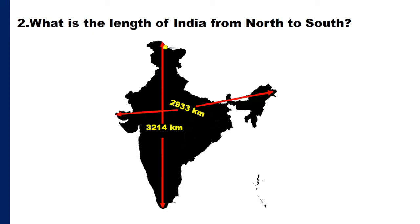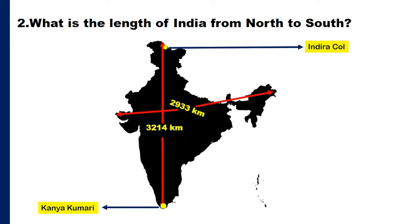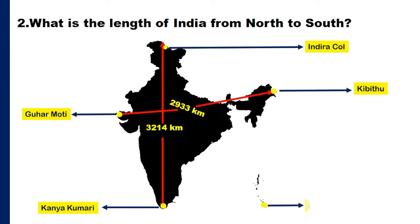Now we will learn the names of India's extreme north, south, east, and west points. The northernmost point of India is Indira Col. It is located in Jammu and Kashmir, and after 2019, in Ladakh. The southernmost point of mainland India is Kanyakumari. The easternmost point is Kibithu, which is located in Arunachal Pradesh. The westernmost point is Guhar Moti, which is located in Gujarat. If we talk about outside mainland India, the southernmost point is Indira Point, which is located in the Andaman and Nicobar Islands.